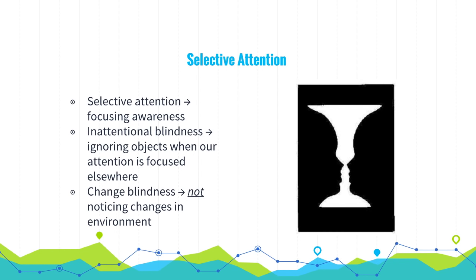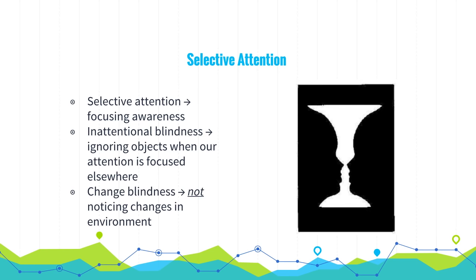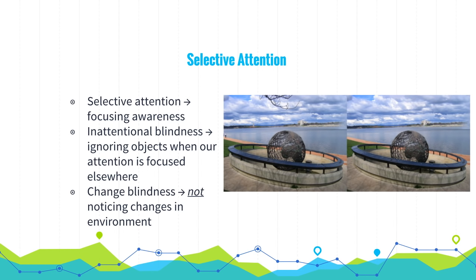Our second type is change blindness — not noticing changes in the environment. Here we have two different pictures, very similar but with subtle changes. See if you can spot some. There's a branch in the first picture that isn't in the second picture. Very good, Frank.